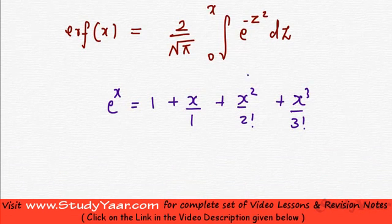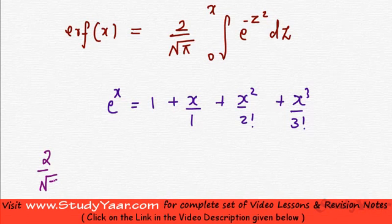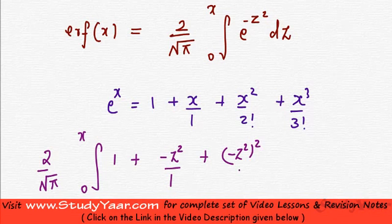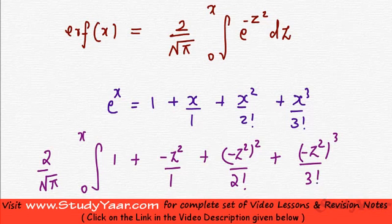So if I use it over here, let's see what I get. I have 2 upon root pi, integral 0 to x of: 1 plus, now instead of x, you have minus z squared. So you have minus z squared upon 1 plus (minus z squared) the whole square upon 2 factorial, plus (minus z squared) the whole cube upon 3 factorial, and so on, and you have dz over here.